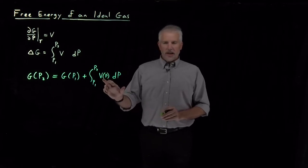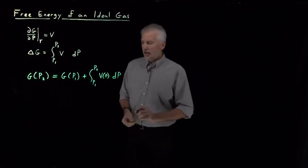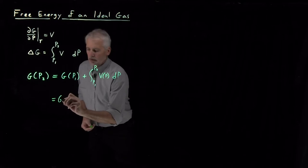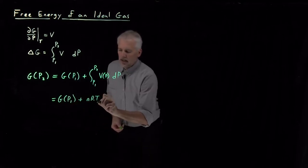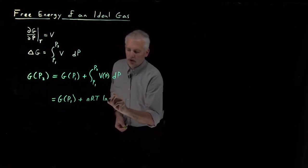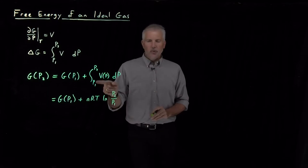For the particular case of an ideal gas, as we've seen, inserting nRT over P here gives us an expression which has the form nRT and then the integral of one over P became log P, evaluated between P1 and P2.